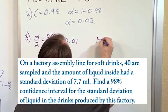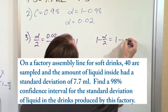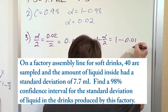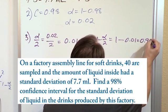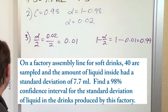And then 1 minus alpha over 2 is 1 minus what I just calculated, 0.01, right? And that's going to be 0.99 when we do that subtraction. So now we have alpha over 2 and we have 1 minus alpha over 2.